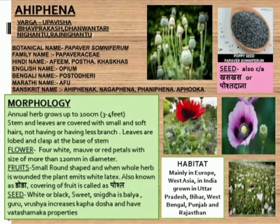Fruits are used as anarka, small round shape. The whole herb is bounded, and the plant emits white latex from the fruit — also known as doda. The covering of the fruit is called post. The seed is white or black, sweet, and is balya, guru, fresh.